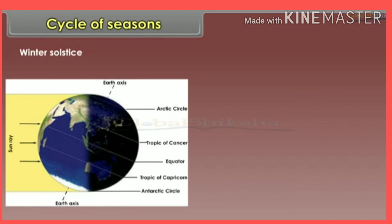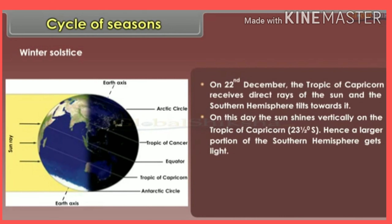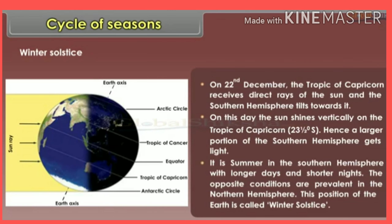Winter solstice: On 22nd December, the Tropic of Capricorn receives direct rays of the sun and the southern hemisphere tilts towards it. On this day, the sun shines vertically on the Tropic of Capricorn at 23 and a half degrees. Hence, a larger portion of the southern hemisphere gets light. It is summer in the southern hemisphere with longer days and shorter nights. The opposite conditions are prevalent in the northern hemisphere. This position of the earth is called winter solstice.